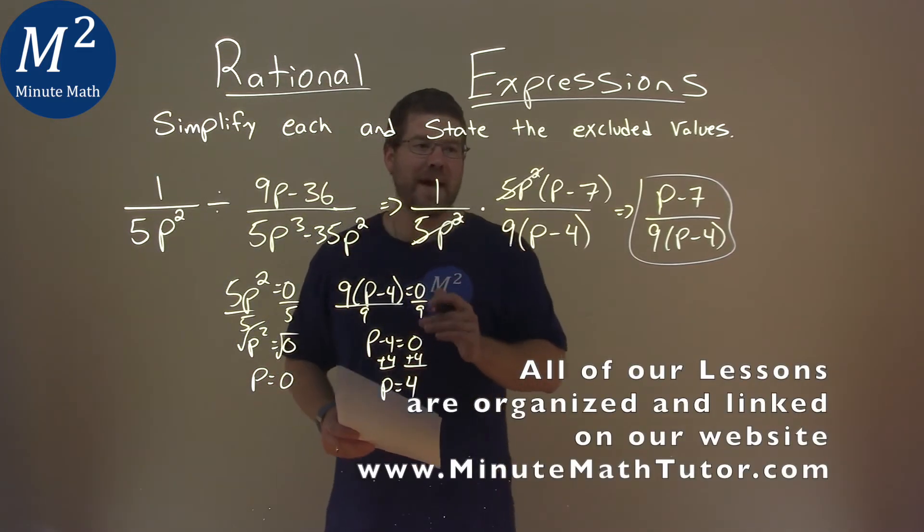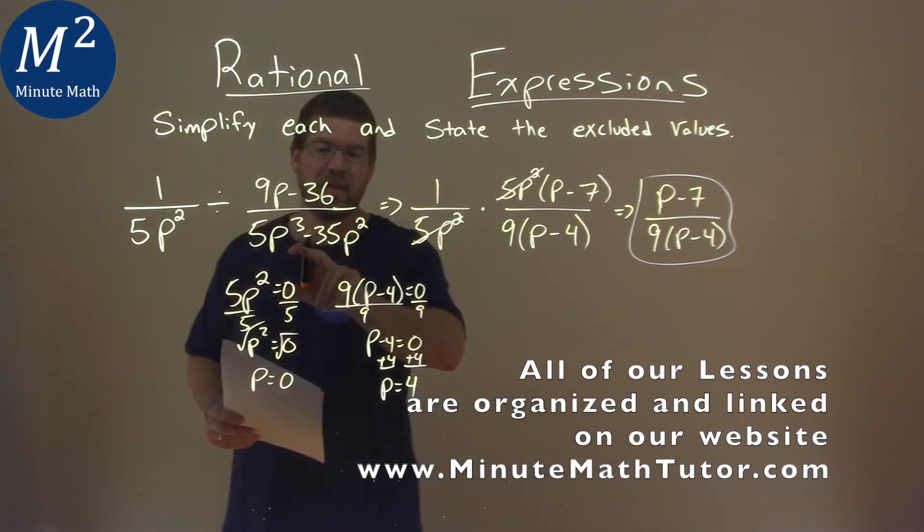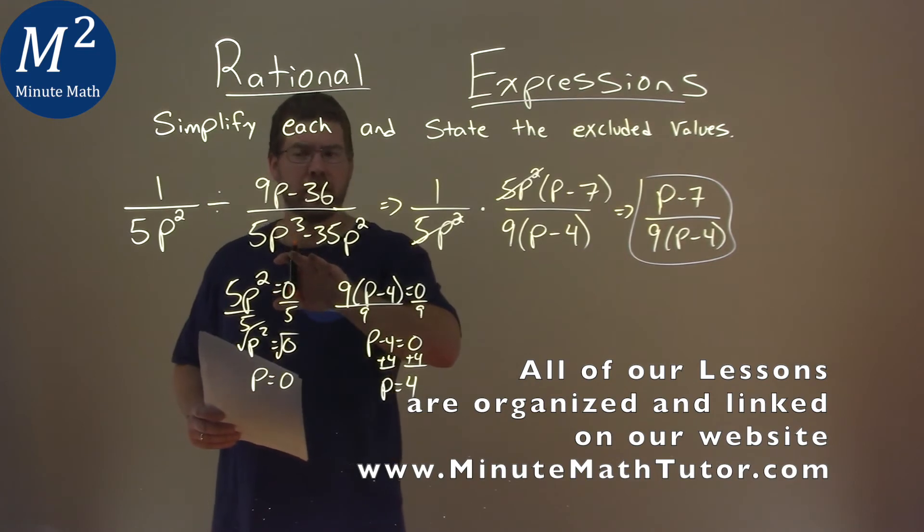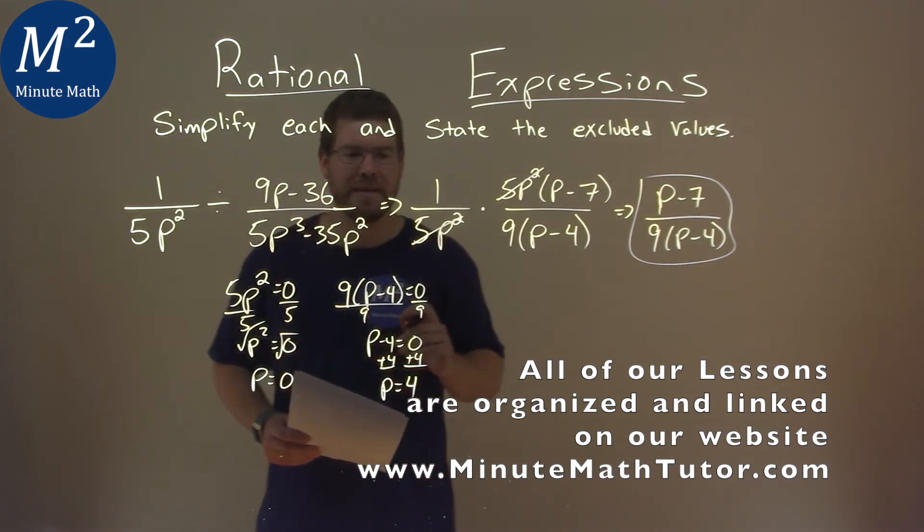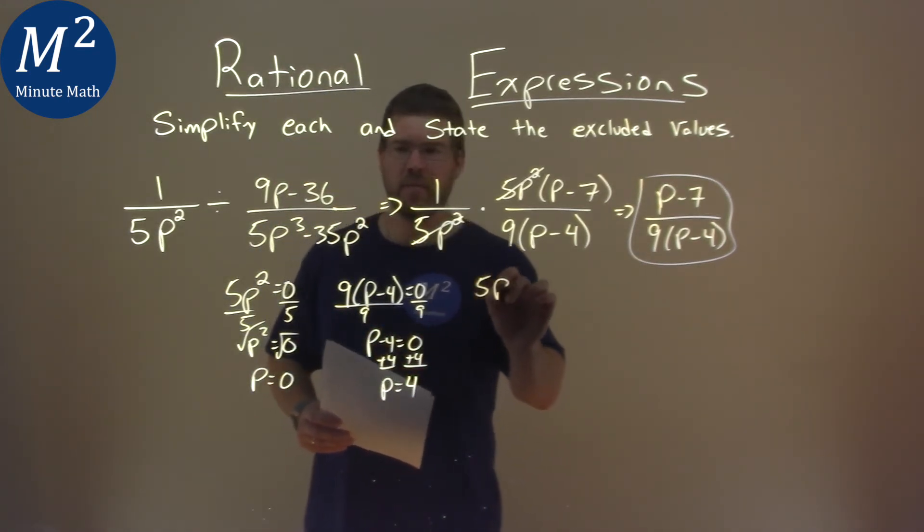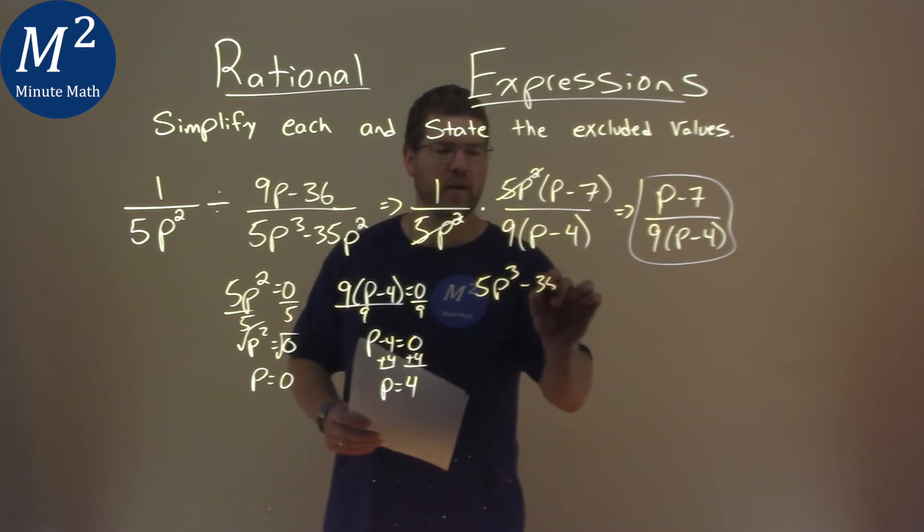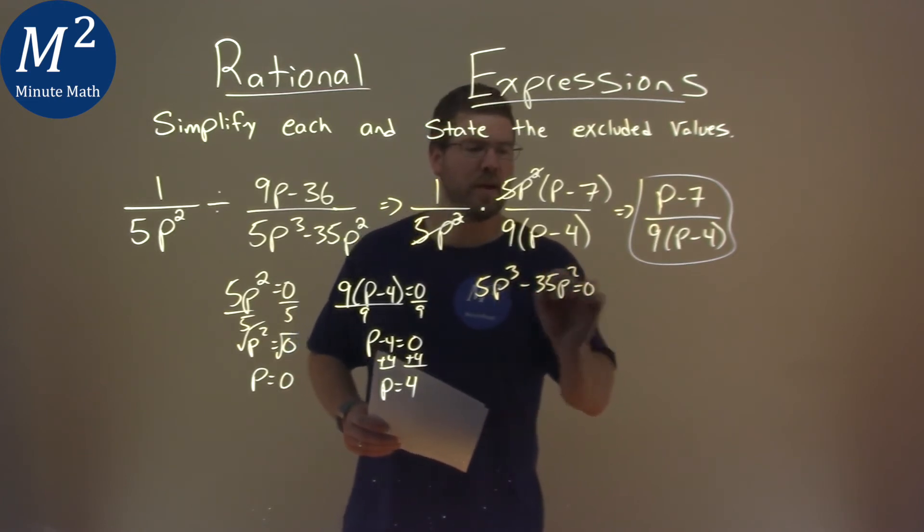So we also have to look at, well, this part that we're dividing by. I know right now it's not in the denominator necessarily, but if we wrote it as one big fraction, it would be. So we have to find when this is also equal to 0. Our 5p to the third power minus 35p squared, we're setting that equal to 0.